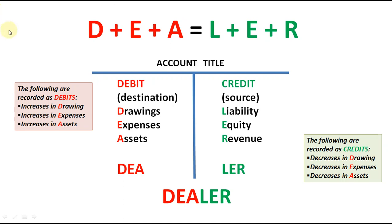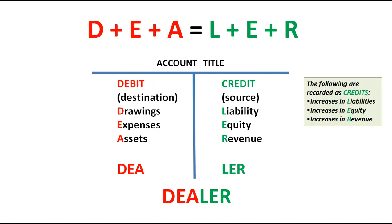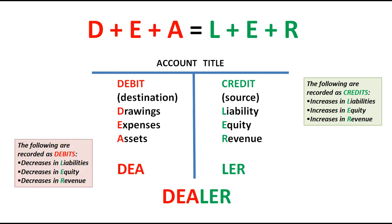Now we go to this portion — yung green. Liability, equity, and revenue — ito naman ang may mga normal balances na credit. Meaning, if ang effect ng transaction is dinadagdagan si liability, si equity, or si revenue, tayo ay mag-credit. So increases in liabilities, equity, and revenue are recorded as credits. Paano naman kung ang effect ng transaction ay binabawasan niya si liability, equity, at revenue? Ang kabaliktaran ng credit ay debit, so kapag nabawasan si liability, equity, at revenue, tayo ay mag-de-debit.